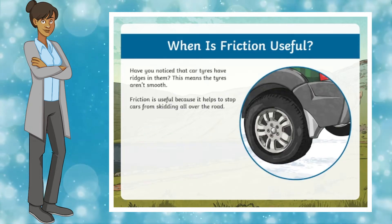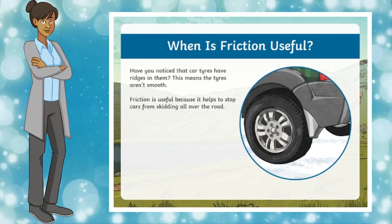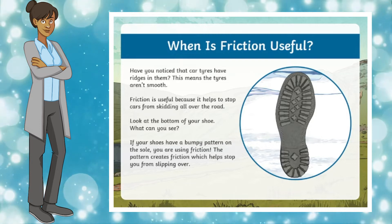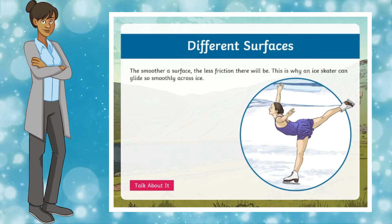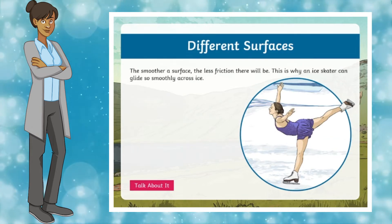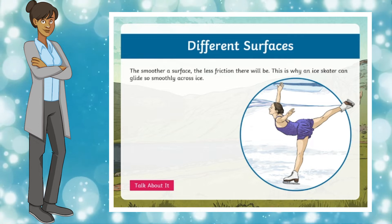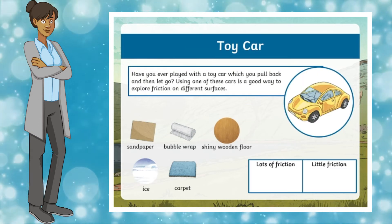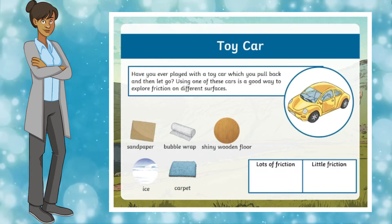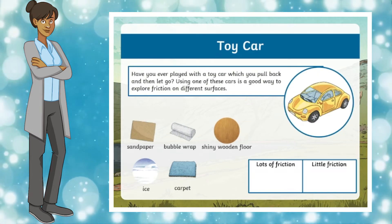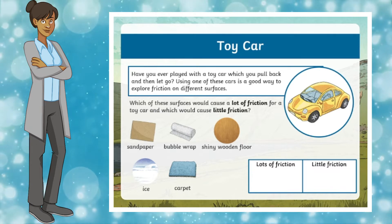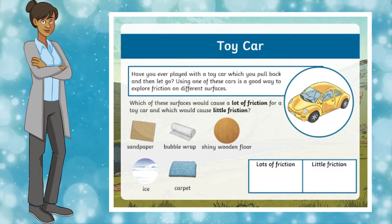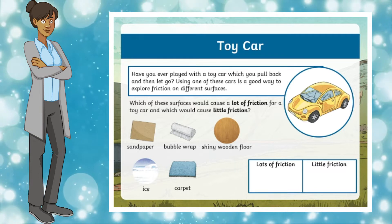Children will learn all about friction and will look at and explain real life examples and how it impacts the way things move on different surfaces. It's a fantastic way to encourage them to think about how different surfaces can cause more or less friction, and get them thinking about questions like: What is friction? When is friction useful? How can friction be dangerous?